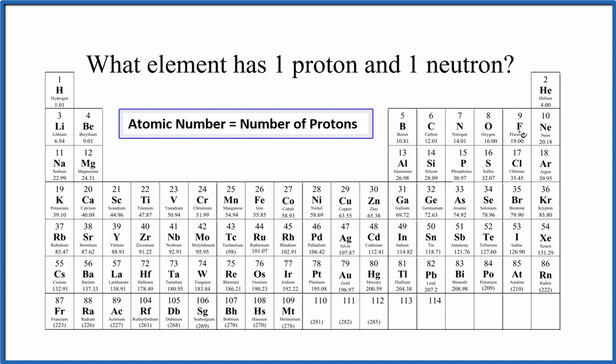On the periodic table, the atomic number is the whole number above the element symbol. It increases by one as we go across the rows or periods on the periodic table.